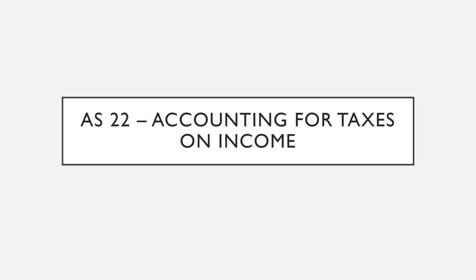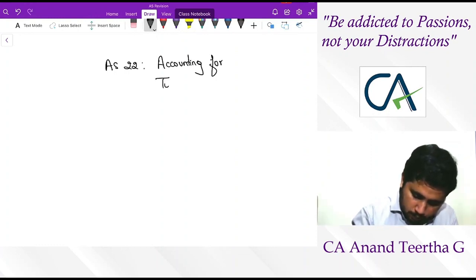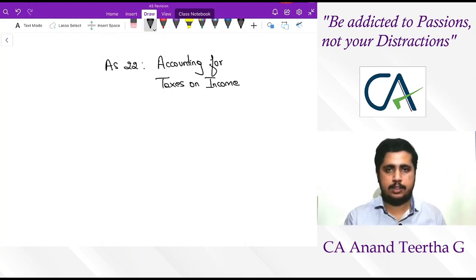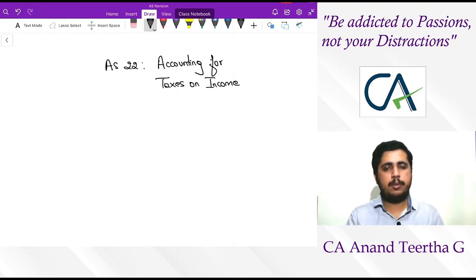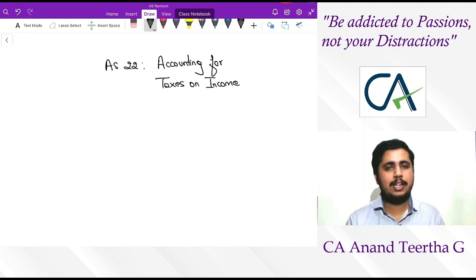That concludes AS 17. Now we move to AS 22 — accounting for taxes on income. This standard establishes a correlation between accounting and income tax. The need for this standard is twofold: disclosure purpose and the matching concept. If accounting profit before tax is 100 rupees at a 30% tax rate, you would expect tax of 30 rupees; but under the Income Tax Act, PGBP calculation might give taxable income of 60 rupees, resulting in tax of 18 rupees. This mismatch confuses users of financial statements, and AS 22 came into the picture to bridge this gap.